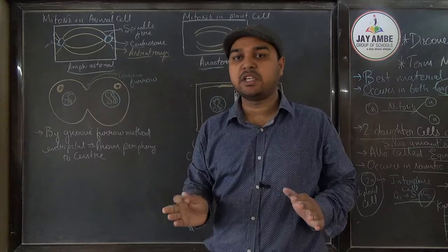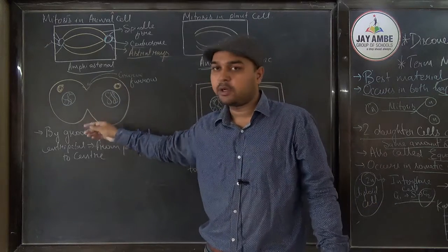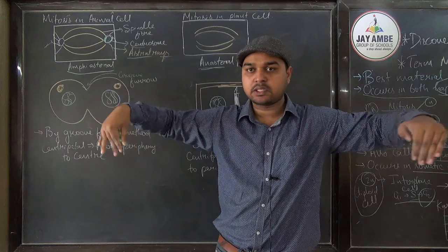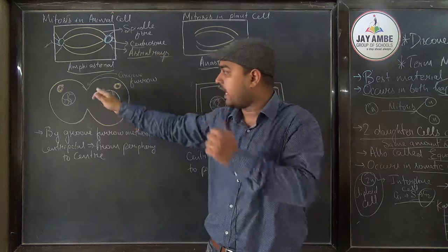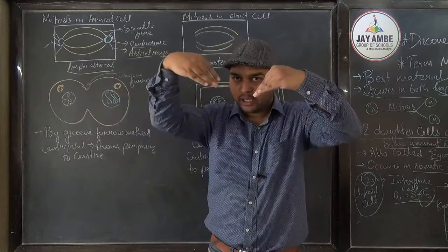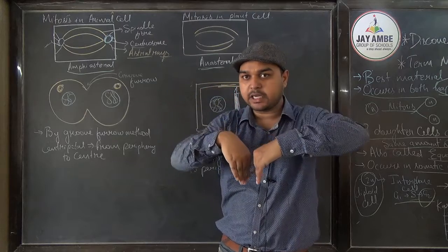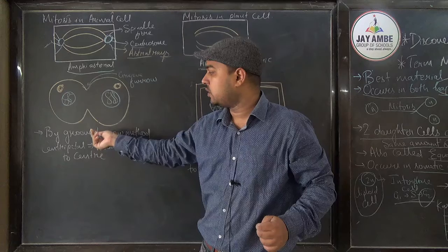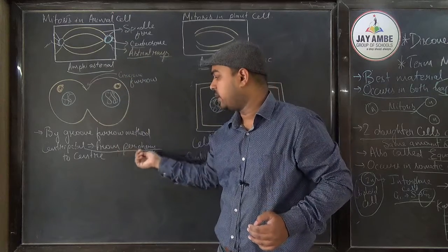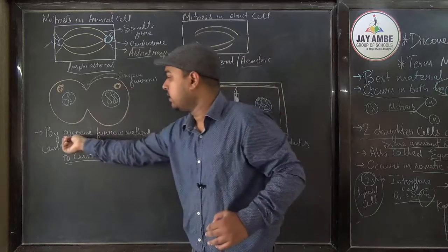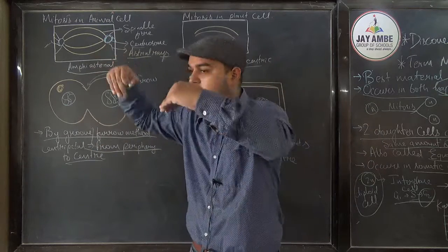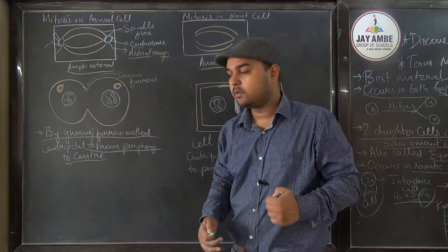In animal cells, cytokinesis occurs by formation of a cell groove or furrow. A furrow forms in the plasma membrane, gradually becomes deeper, and the cell divides into two. This process is centripetal — meaning it proceeds from the periphery towards the center. So animal cell division happens by groove/furrow formation from outside to inside.